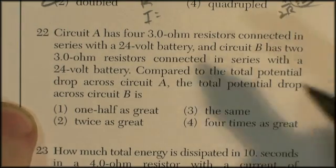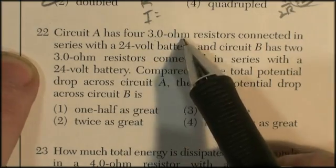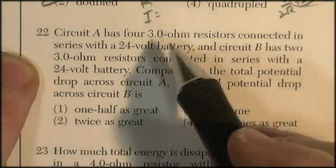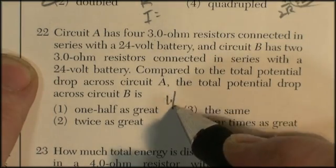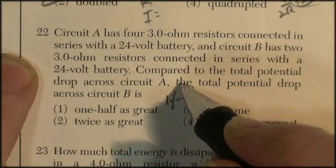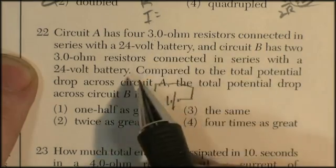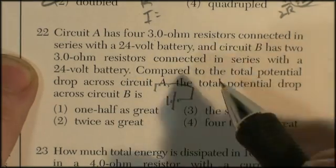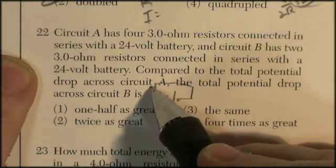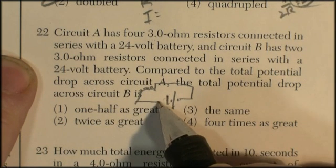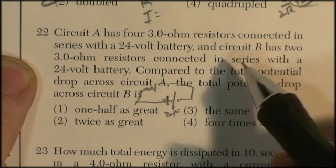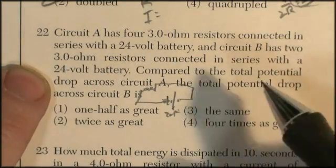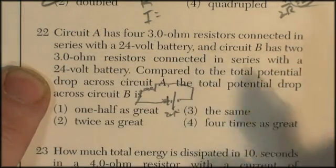Question 22. Circuit A has four 3-ohm resistors connected in series with a 24-volt battery. So you've got 24 volts. And circuit A has got, I don't know, they're connected in series. Maybe they're four Christmas lights. Sometimes Christmas lights are connected in series. And 24 volts.